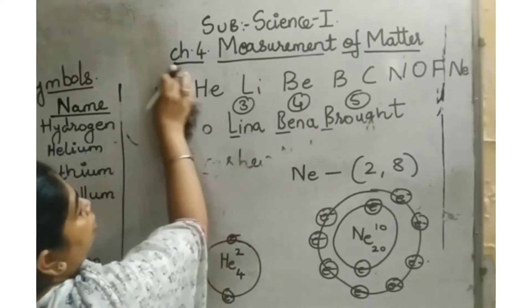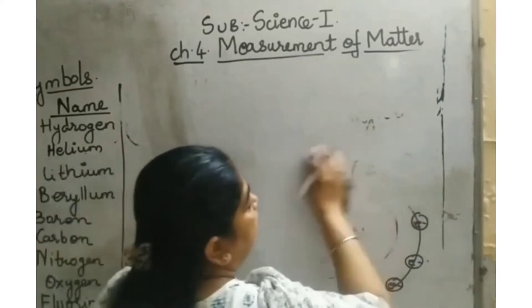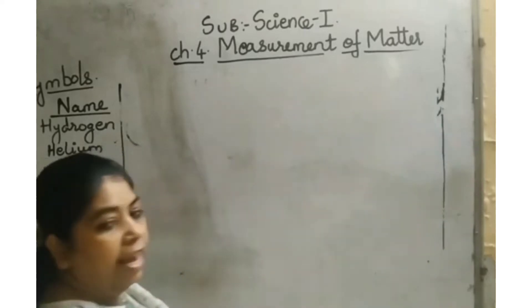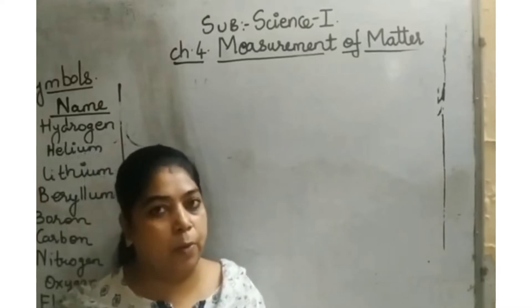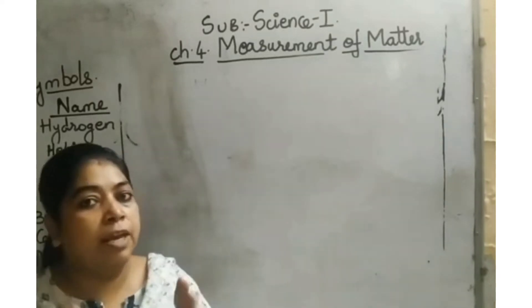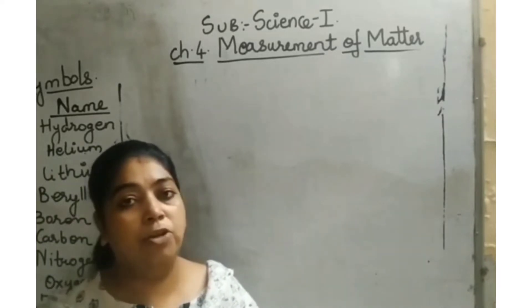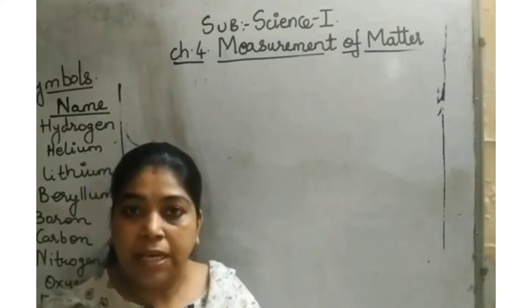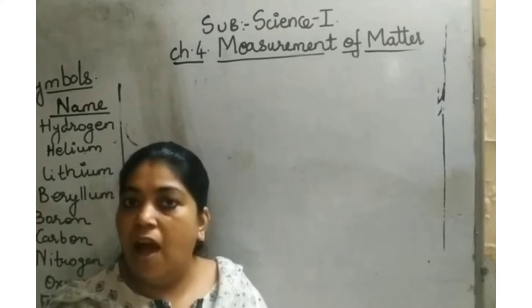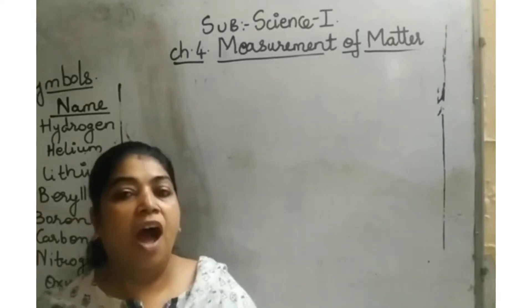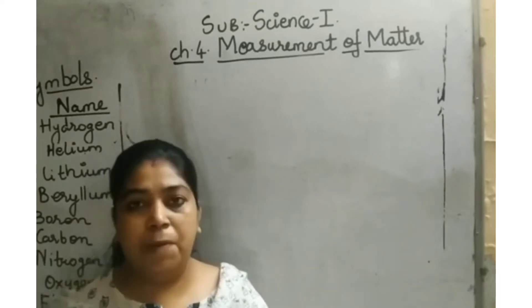I am giving you the first 10 elements' electronic configurations so that during the break time you can go through them. I am not giving all 118 elements — that is not required. If you know the first 10 to 20 elements, it's sufficient for this chapter. It is very important to know the atomic number and atomic mass number, then you will understand valency and the concept of molecular formula.